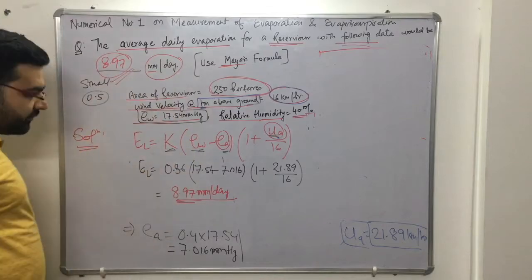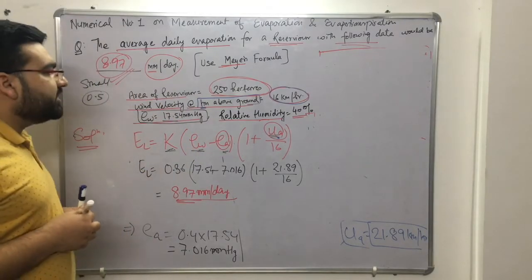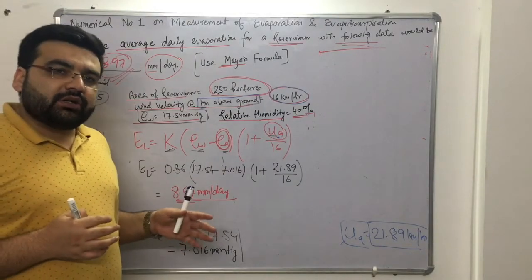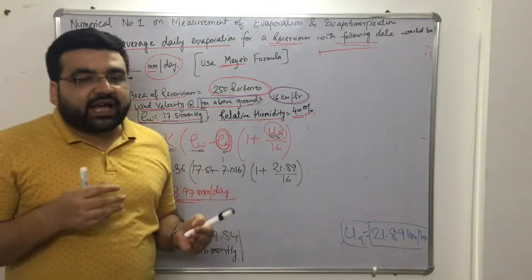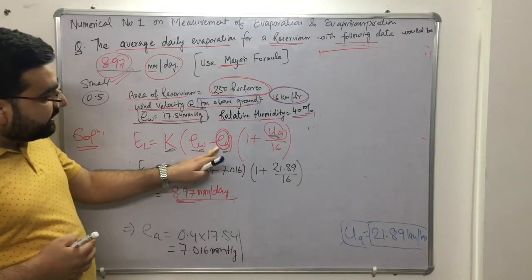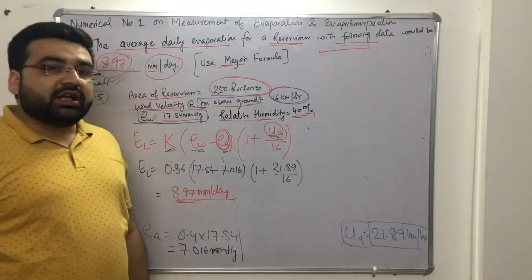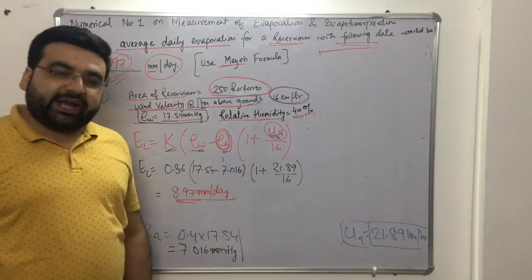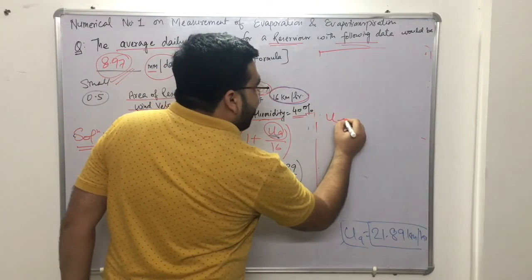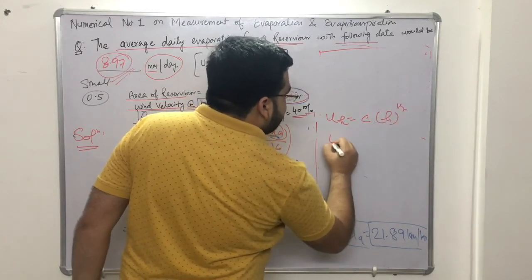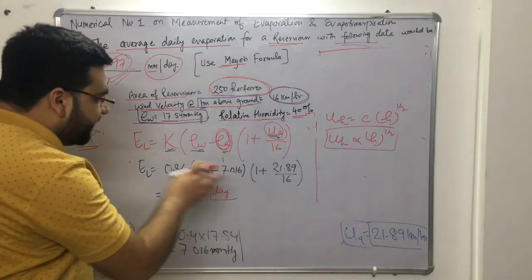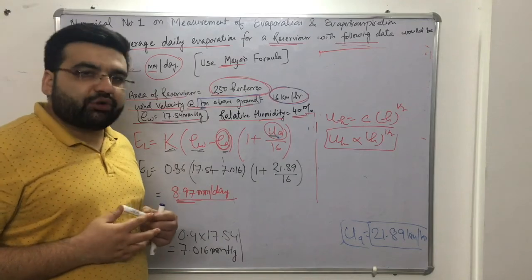The correct answer is 8.97 mm per day. This question was chosen to demonstrate how to find ea using the concept of relative humidity, and how to find u9 using the velocity-height relation (u ∝ H^(1/7)). In GATE examinations, questions can be a mixture of two or three subjects — here hydrology combined with fluid mechanics or irrigation. Now let's move forward and solve another numerical on evapotranspiration.